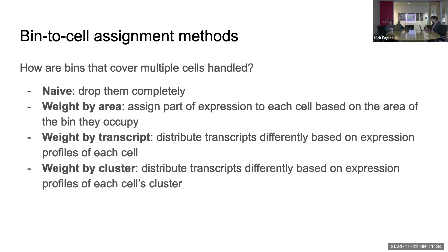There are several methods discussed for bin-to-cell assignment, and they really differ based on how they handle bins that cover multiple cells. The bins are in a square grid, and it's possible for a bin to cover multiple cells — for example, when the edges of two cells are touching near the center of a bin. So they want a smart method to handle that situation.